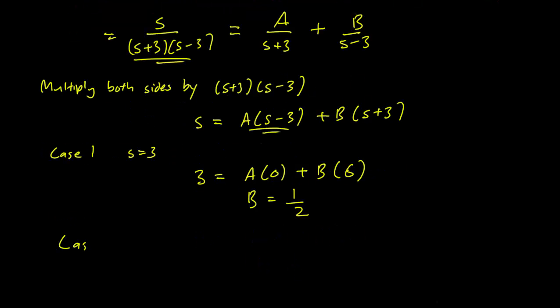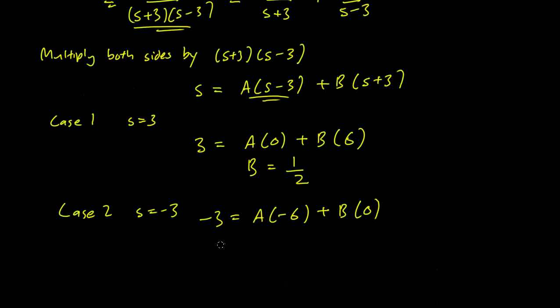Our second case is s equals minus 3 and this leaves us with minus 3 equals a times minus 6 plus b times 0. Which gives us again minus 3 equals minus 6a. So a is also equal to 1 half.